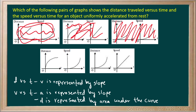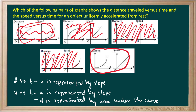Next we have a distance versus time graph which shows a high initial speed that is decreasing with time. And then on our speed versus time graph, we see a low initial speed that is increasing with time. These depict opposite accelerations, and the speed versus time graph actually depicts a variable acceleration. So again, not the correct choice, which leaves only this as the correct choice.